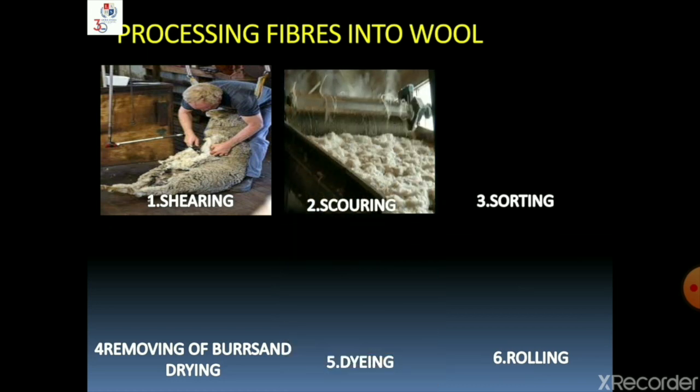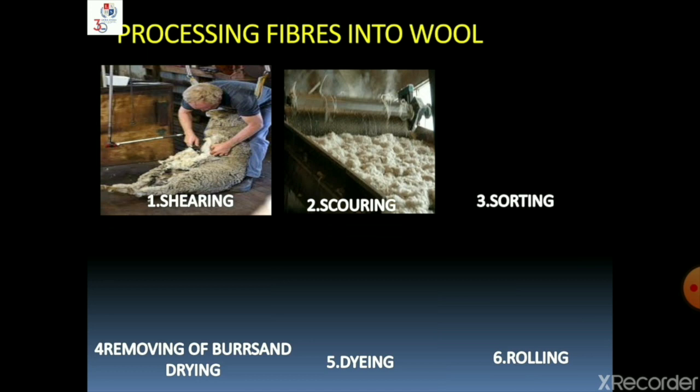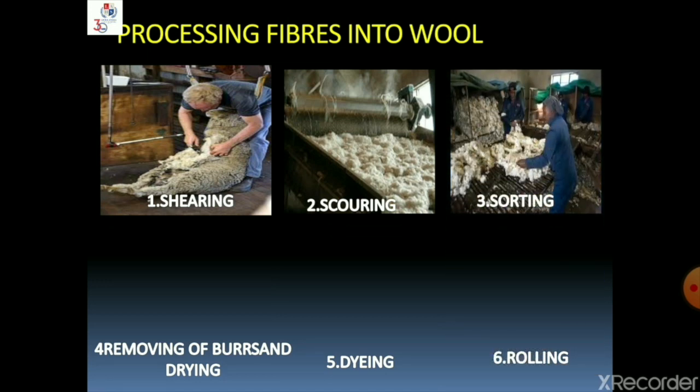Now let's know about scouring. It is the process of removing dirt, grease, and dust from the hair removed from the sheep. It is generally done with the help of machines. Third comes sorting — it is the process of separating the hair of the sheep according to their texture.